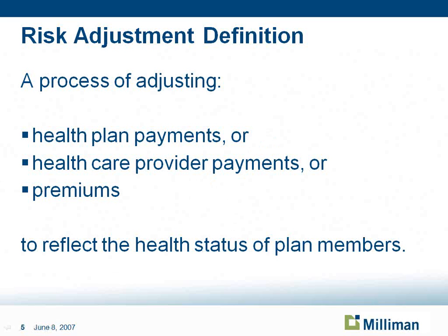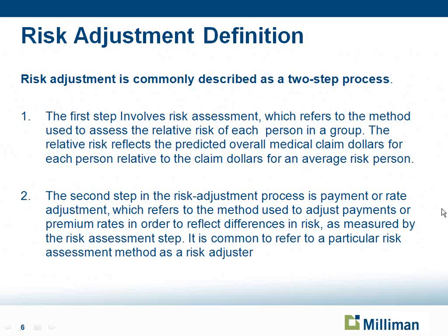So what is risk adjustment? Risk adjustment is a process of adjusting either health plan payments, health care provider payments, or premiums, and the purpose is to reflect the health status of members. Risk adjustment is commonly described as a two-step process. The first step involves assessing the relative risk of each individual in the group — each individual is assigned a risk score, with one being their expected cost at the plan average. Once each individual has been assigned a risk score, the second step is to adjust the payment, or what we call rate adjustment.